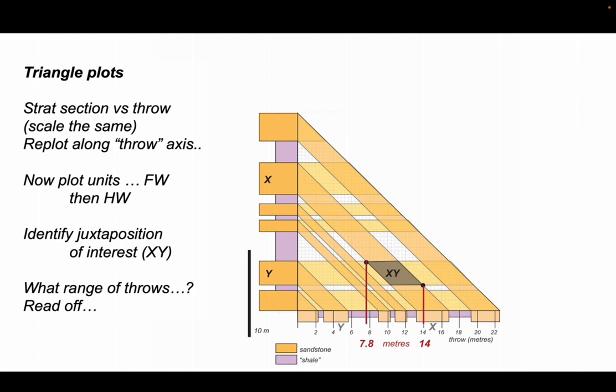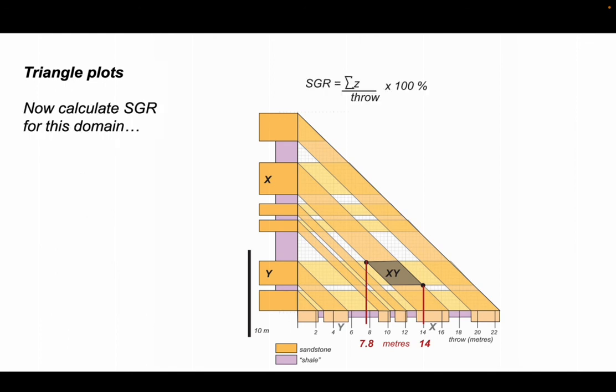This is a really quick way of illustrating how different units are juxtaposed as faults that cut this succession vary their throw. Now let's examine whether a fault that juxtaposes sandstone X and Y will actually permit fluid transmissibility between them. We're going to calculate the shale gouge ratio.